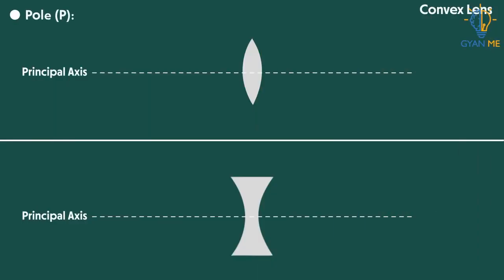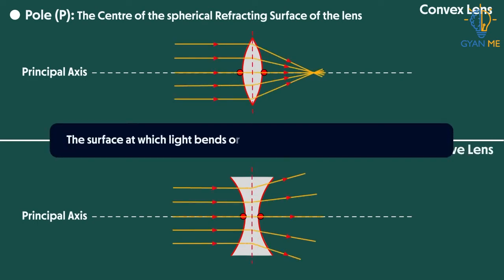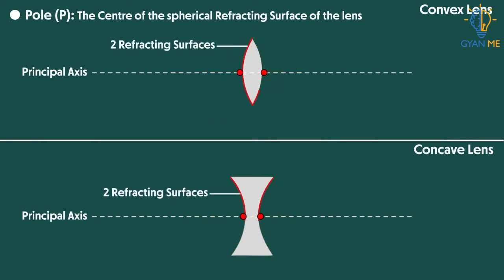The next term is pole. It is the center of the spherical refracting surface of the lens. Yes, this surface where the light bends or it refracts is called the refracting surface for this lens. So there are two refracting surfaces, one this and the other one on the other side. The center point of the refracting surface of the lens is called pole, denoted by P.